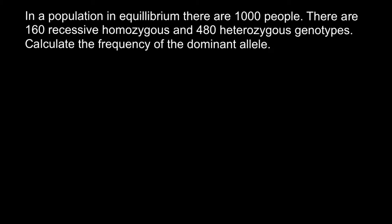Hello and welcome to Nikolai's genetics lessons. Today's problem is going to be about population genetics. In a population in equilibrium there are 1000 people. There are 160 recessive homozygous and 480 heterozygous genotypes. Calculate the frequency of the dominant allele.